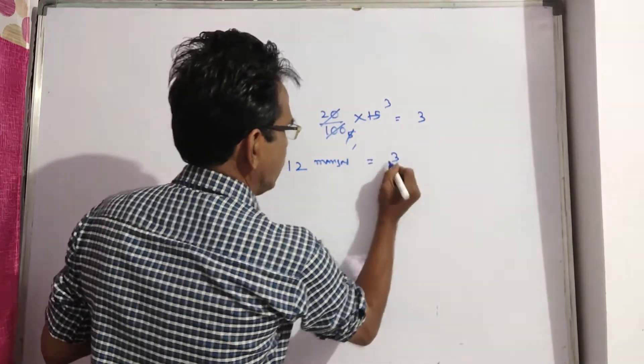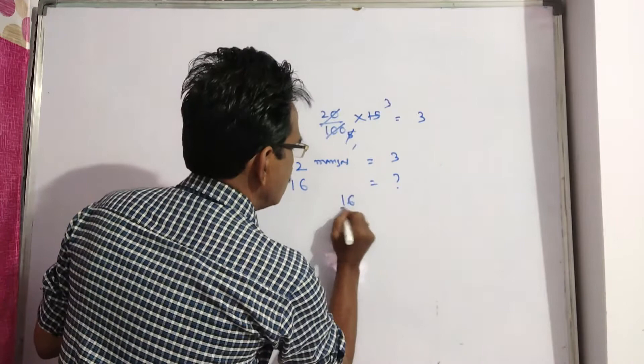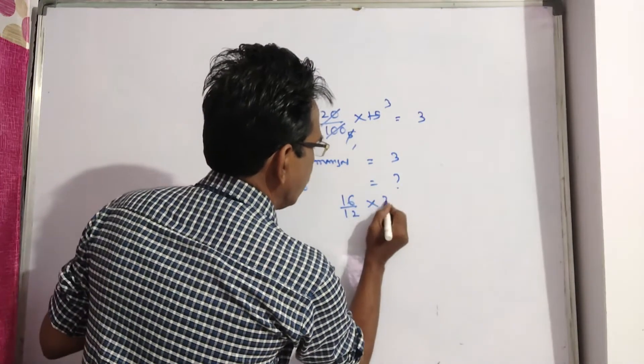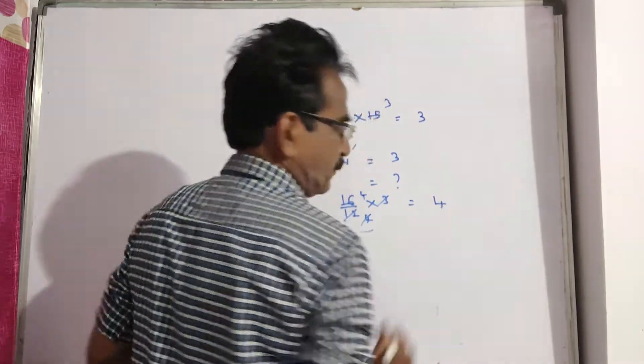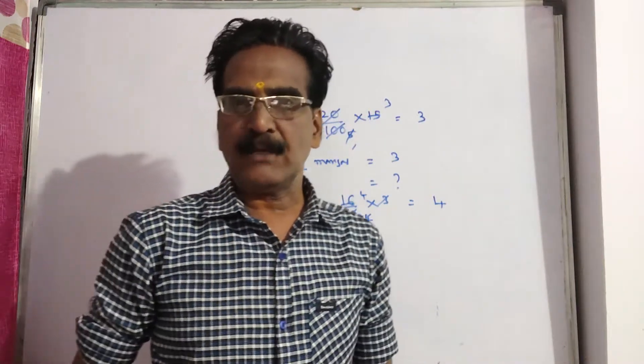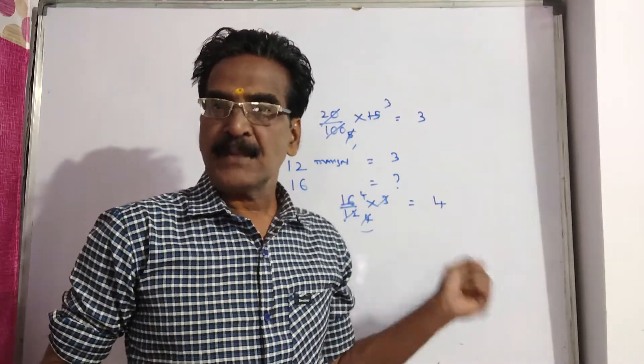Price 3 rupees. Then 16 mangoes is equal to what? 16 by 12 into 3, three fours, four fours. So 4 rupees. The price of 16 mangoes is rupees 4. This is after reduction.